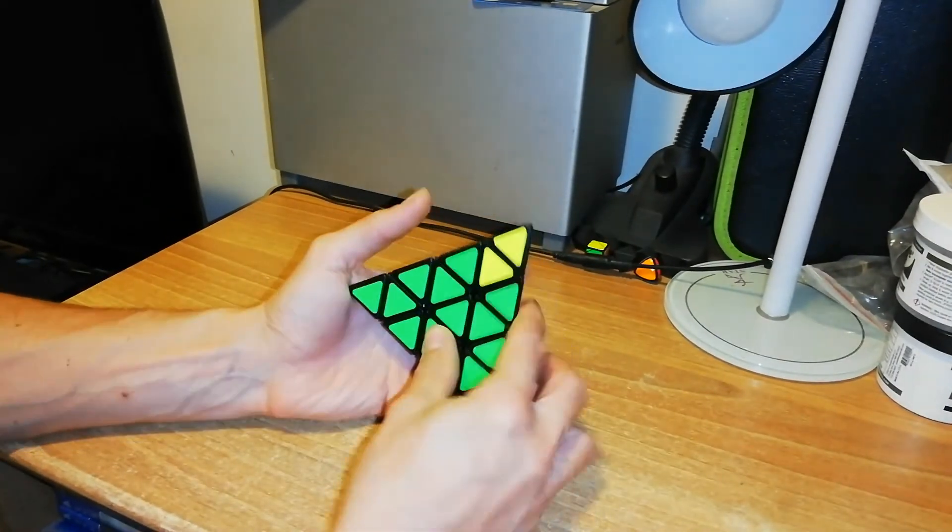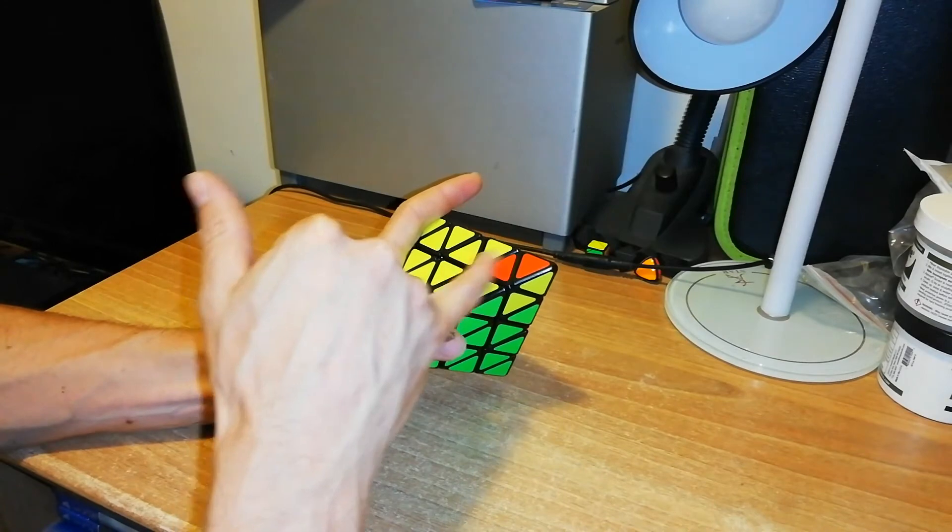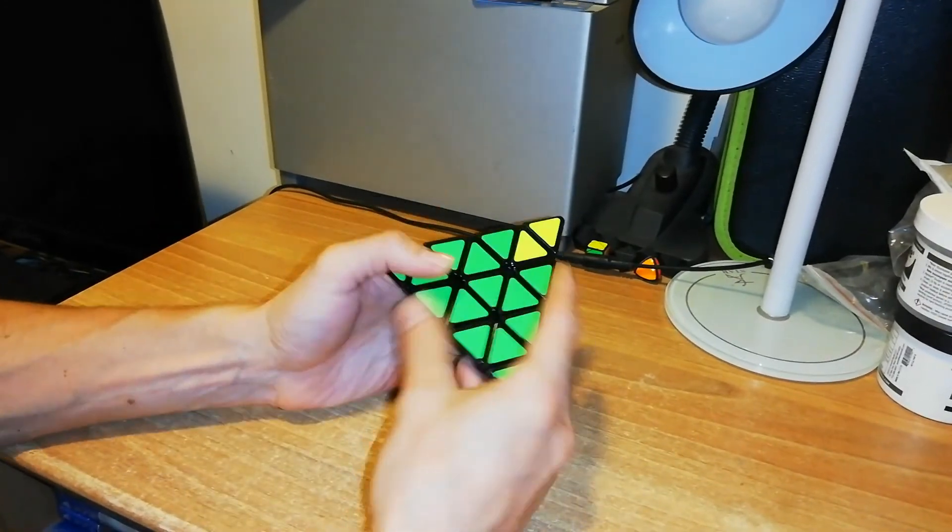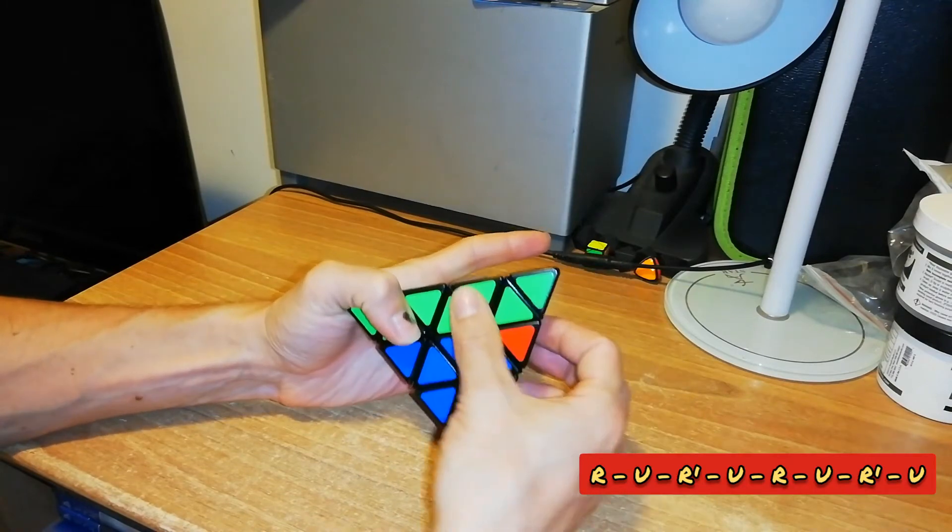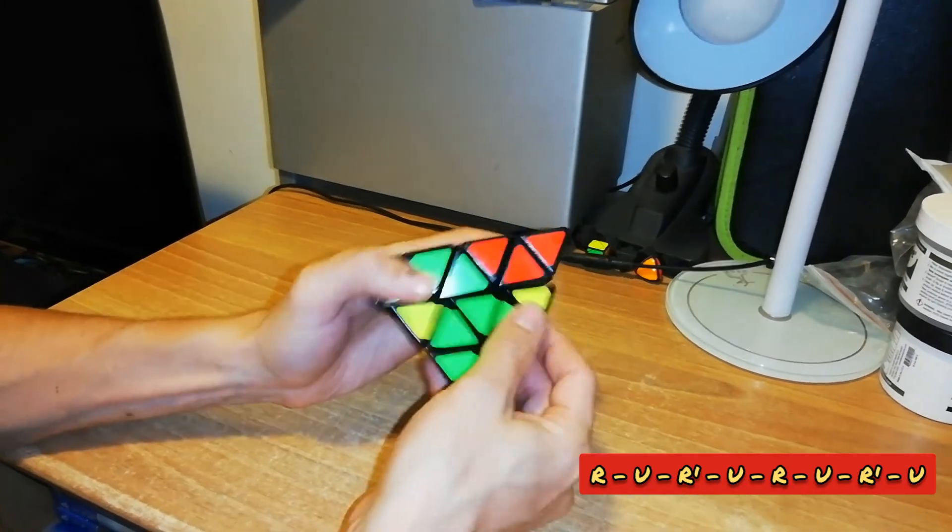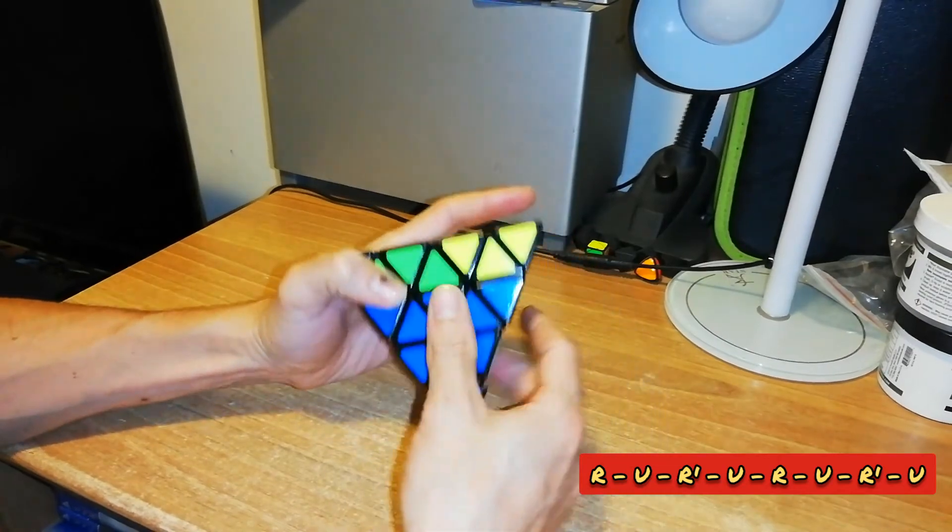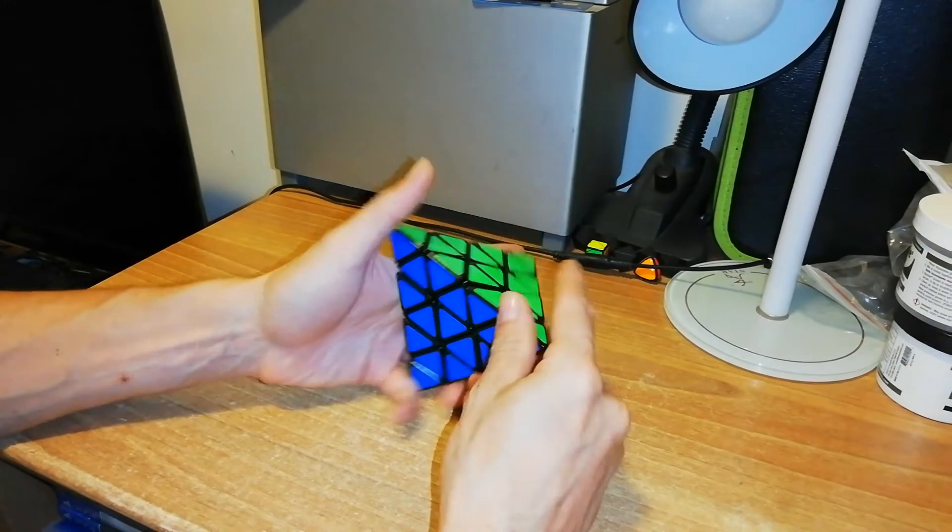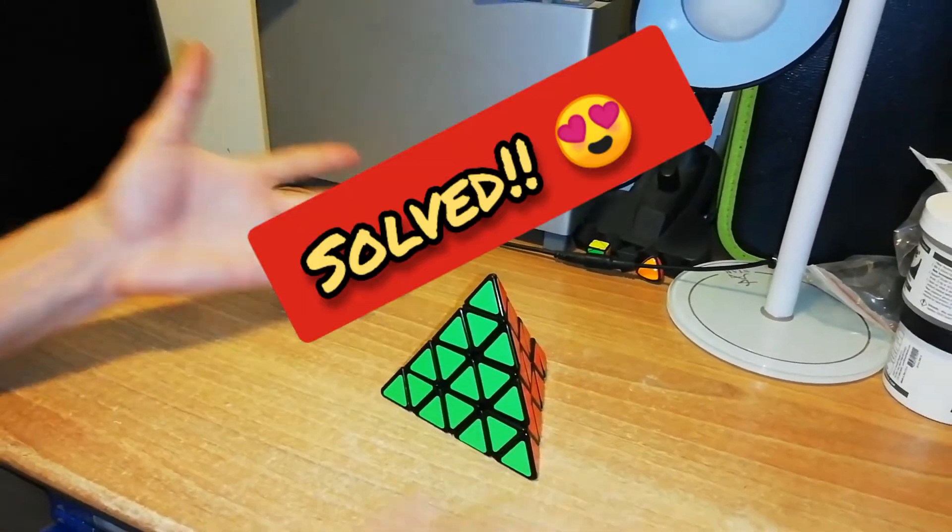if I apply the same algorithm again, this yellow will pair with the yellow, this red with the reds, and this green with the greens. So if I do again R U R' U then R U and R' and U, in this case now the puzzle is now solved.